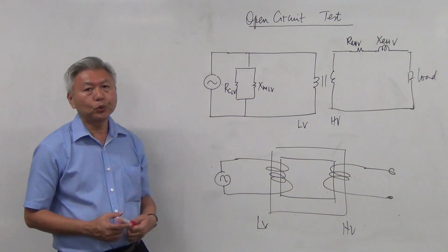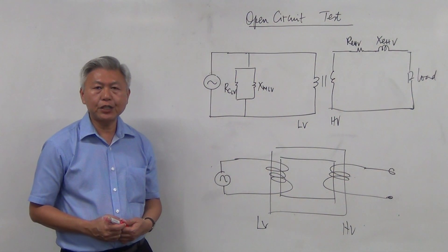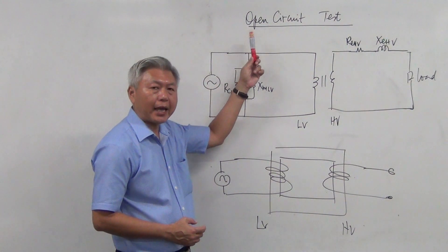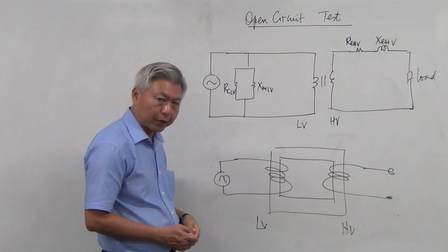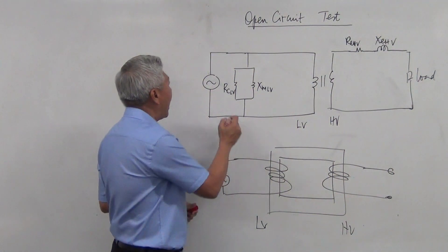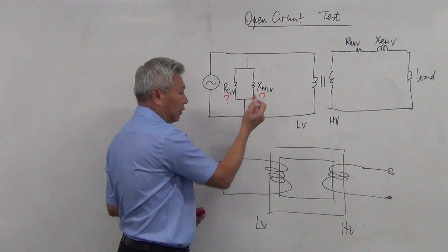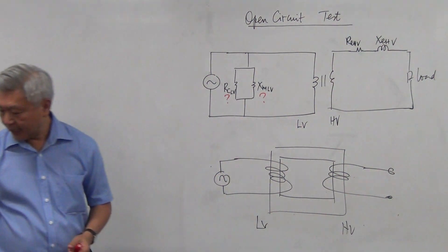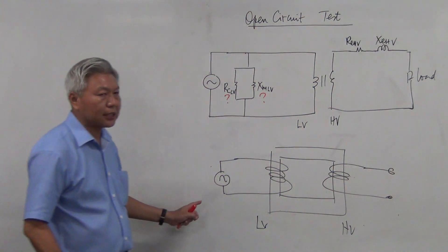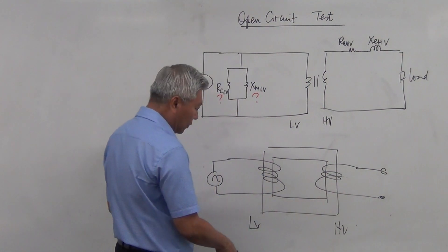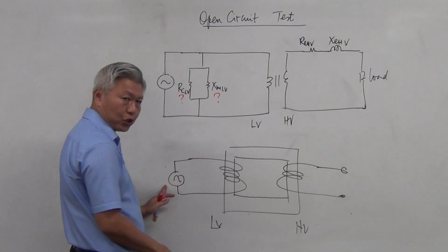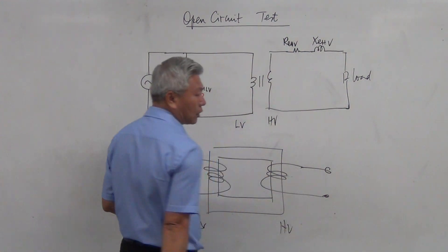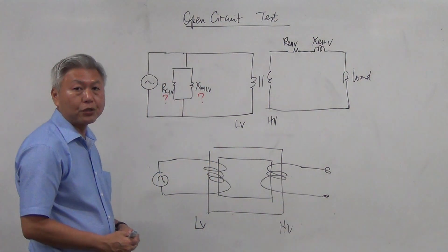Now let's come to this transformer — a very interesting experiment called the open circuit test. The purpose of this experiment is to get the values of RC and XM. What is entailed is that you have a transformer, you apply voltage at the low voltage side, and you leave the high voltage side open circuit. That's why it's called the open circuit test.